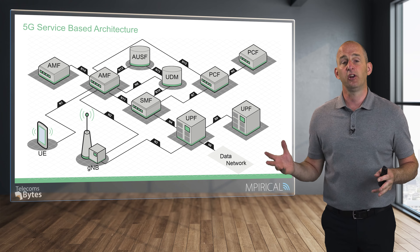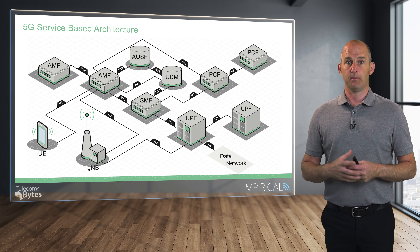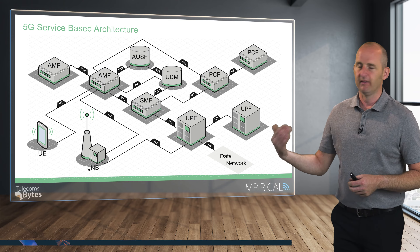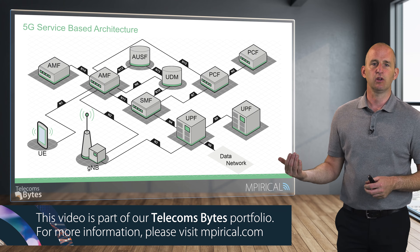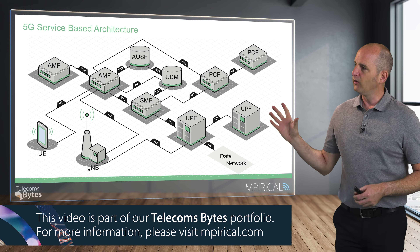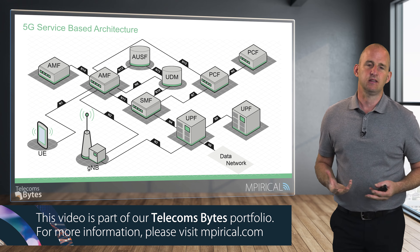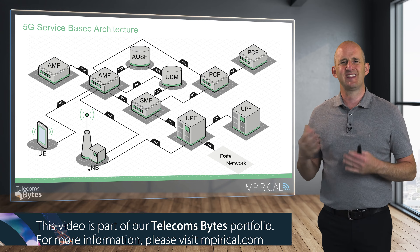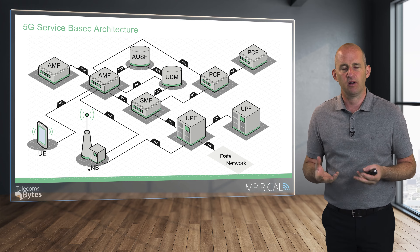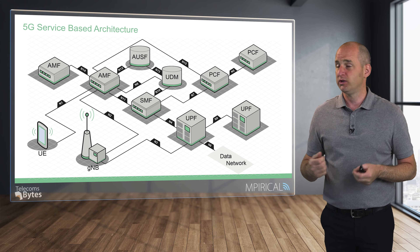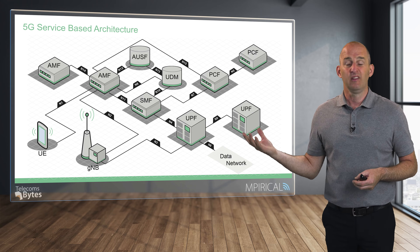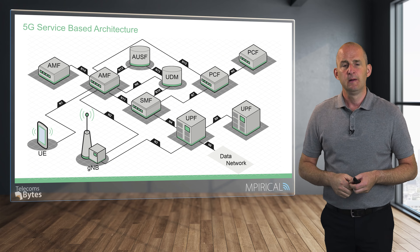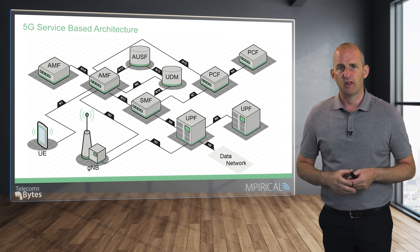On screen, believe it or not, is a basic representation of the 5G core network and the access network as well. Now, the core network isn't really like this in 5G because this diagram represents everything as a separate kind of monolithic node, which you could be forgiven in thinking that these are all separate pieces of hardware. But in reality, this is not the case.